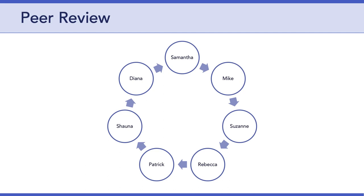For example, Samantha will review work submitted by Mike and Suzanne, whereas Mike will review work submitted by Suzanne and Rebecca. In this way, everyone in the class will produce two peer reviews while simultaneously receiving peer reviews from two different classmates. Hope that makes sense.